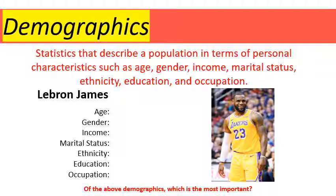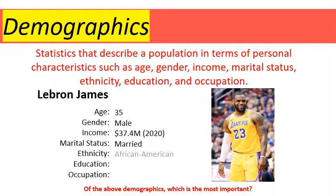If we apply demographics to LeBron James, someone most of us are familiar with, we can quickly create a list of his demographic information. His age is 35, gender is male, income — in 2020 LeBron James made 37.4 million dollars, so a pretty hefty income. Marital status: married. Ethnicity: African-American. Education: high school — LeBron graduated high school. And occupation: NBA player. These are examples of demographics; they're statistics.